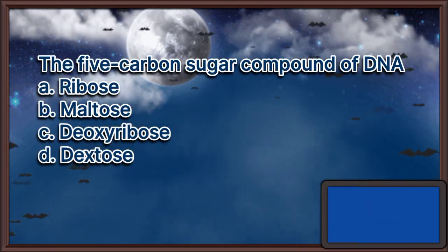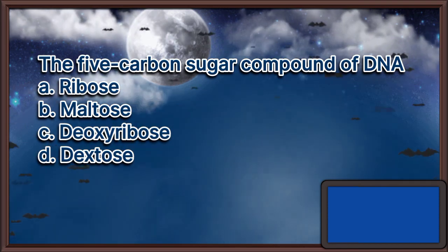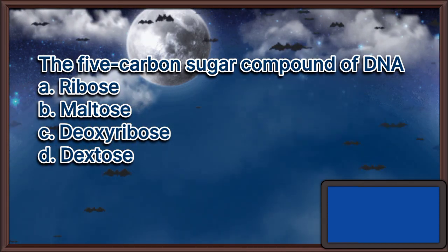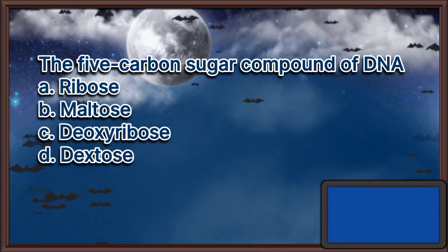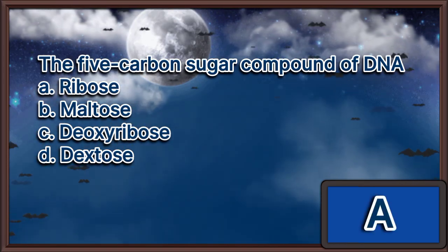The 5-carbon sugar compound of DNA. A. Ribose. B. Maltose. C. Deoxyribose. D. Dextrose. The answer is letter A.